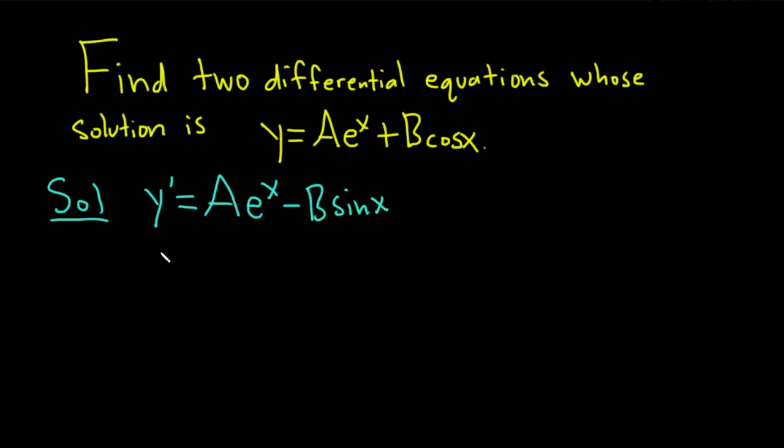Since we have two constants, let's go to the second derivative. So it'll be A e to the x and then minus B cosine x. All right, let's see what we can do with these.